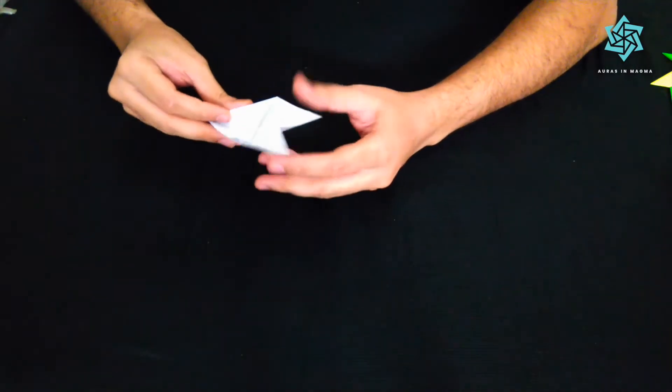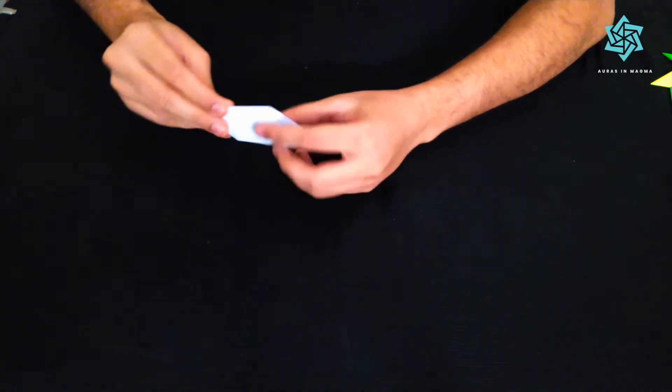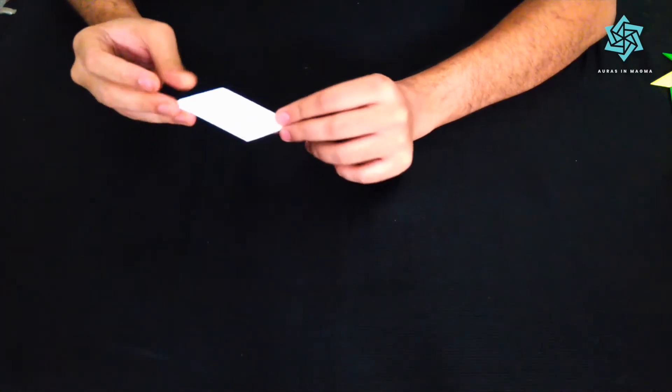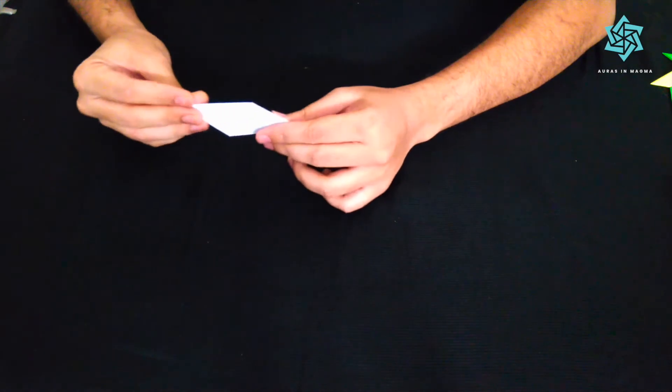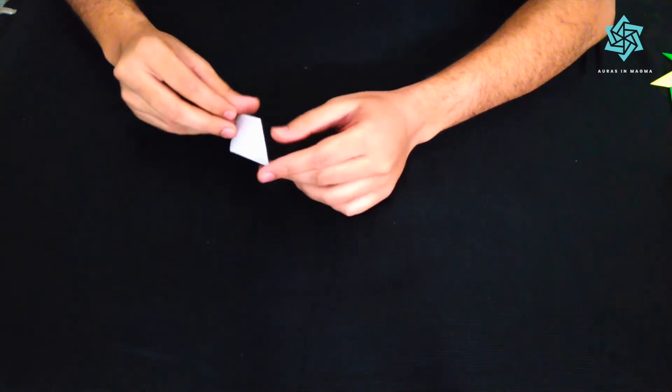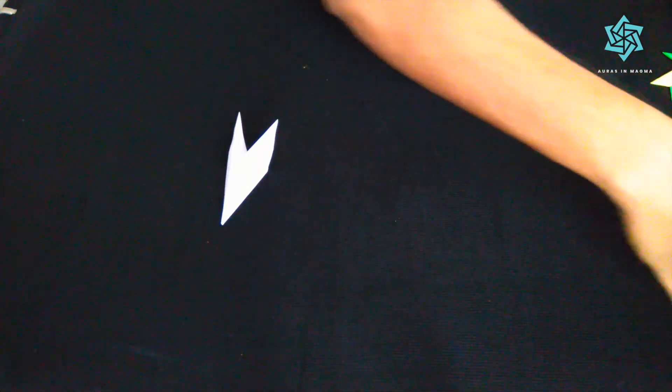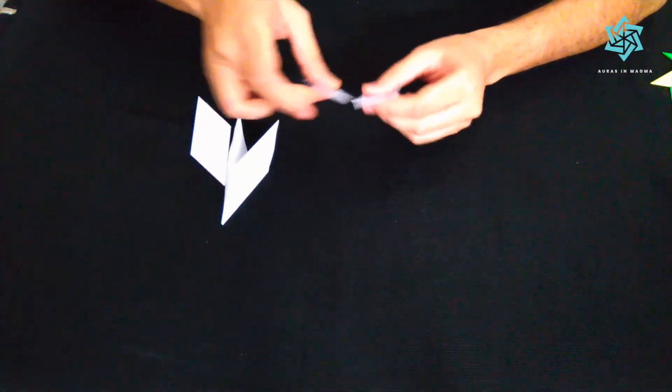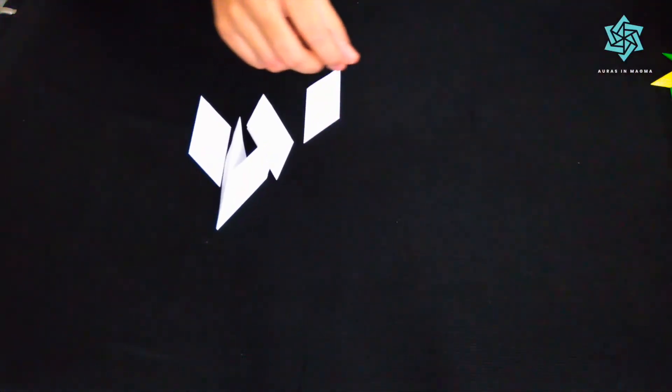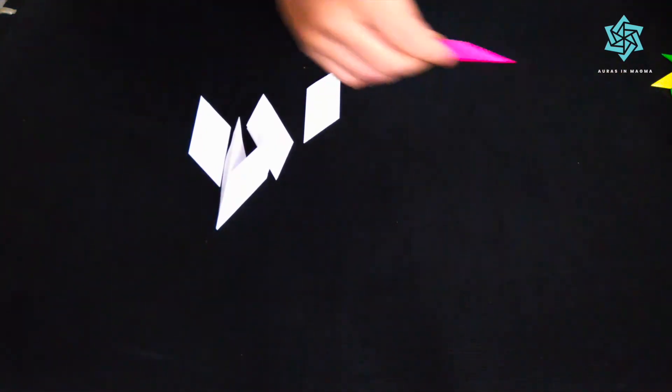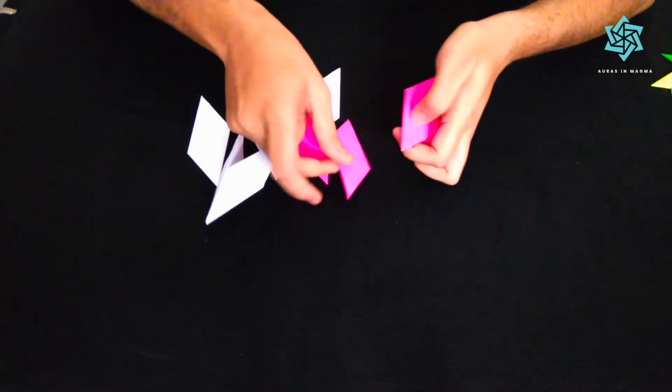Now I just fold it back how it was and there you go. This is your module for this shuriken. Now we will require eight of these. So there's one, there's two, three and four and to get some contrast I am using a different color here.